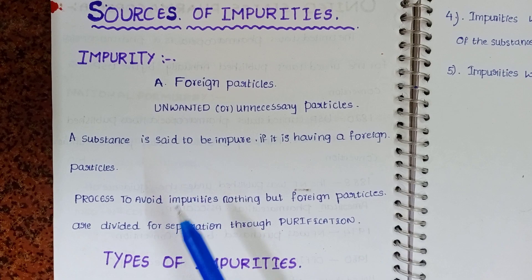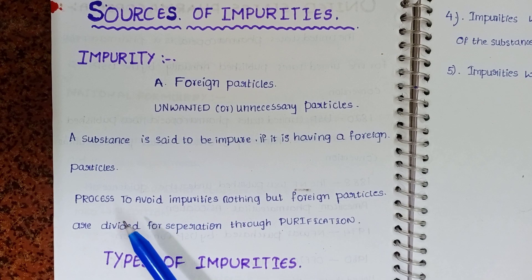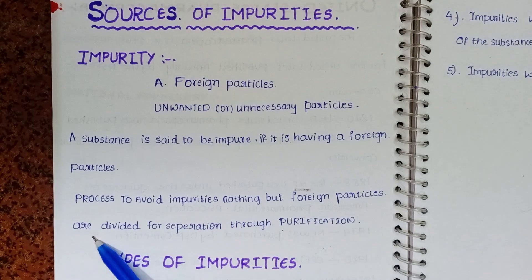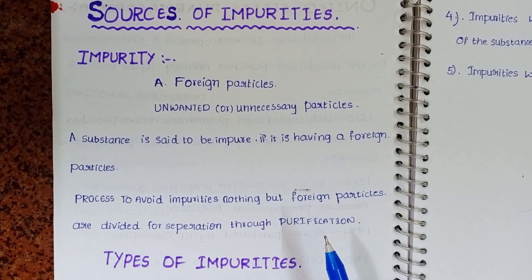So how do we reduce impurity? The process to avoid impurities — nothing but foreign particles — involves separation through purification. Impurities are removed through the process of purification.